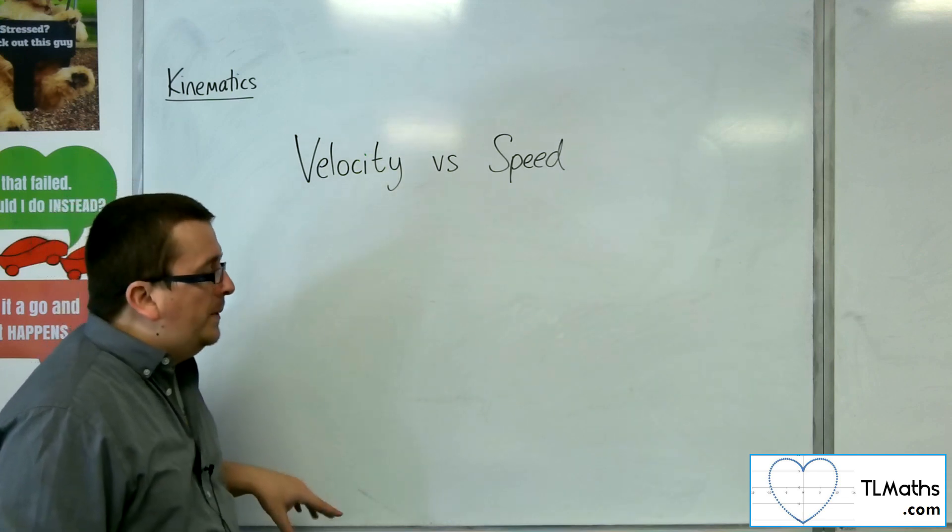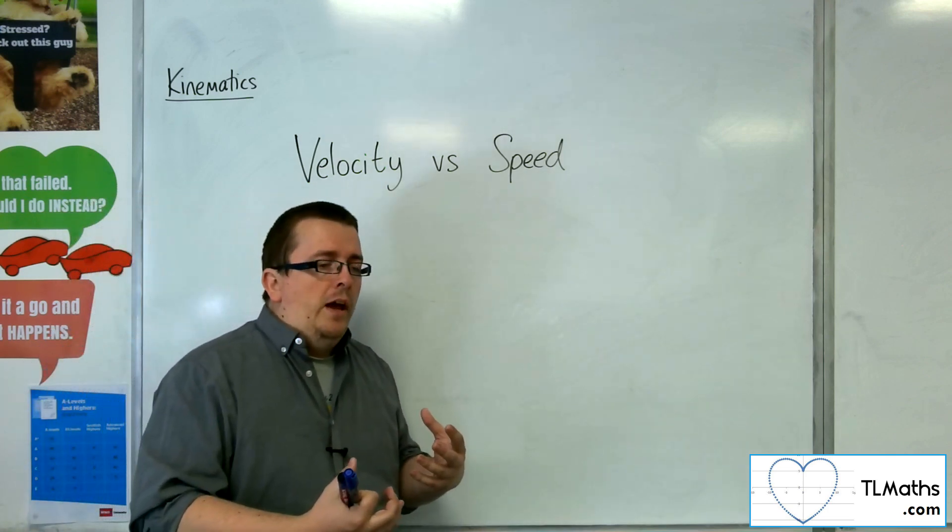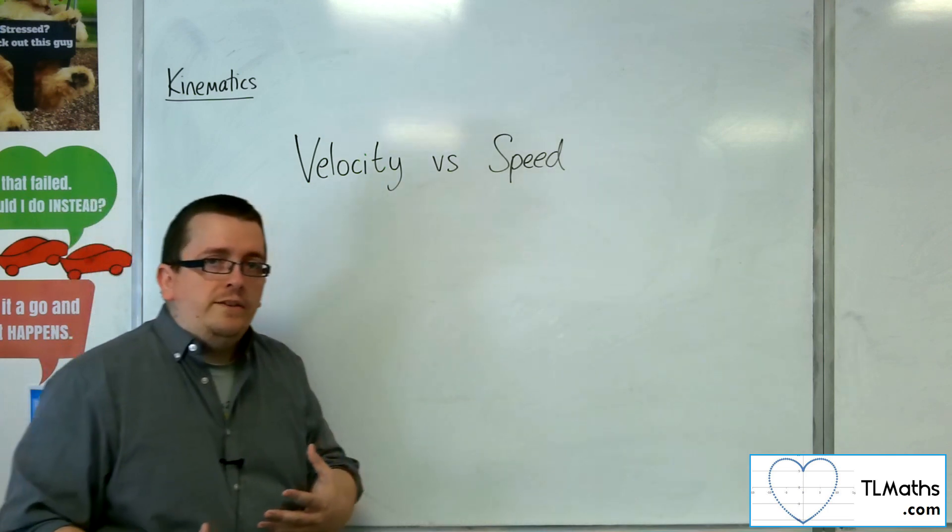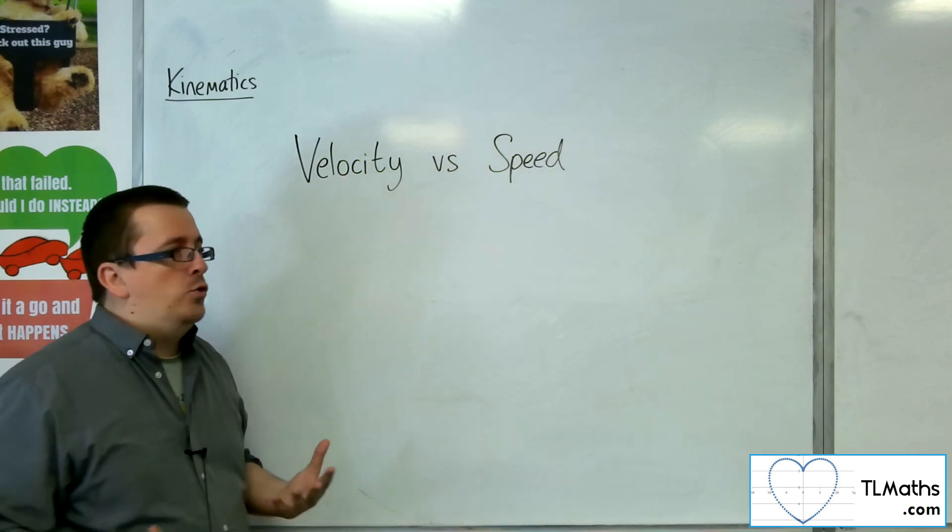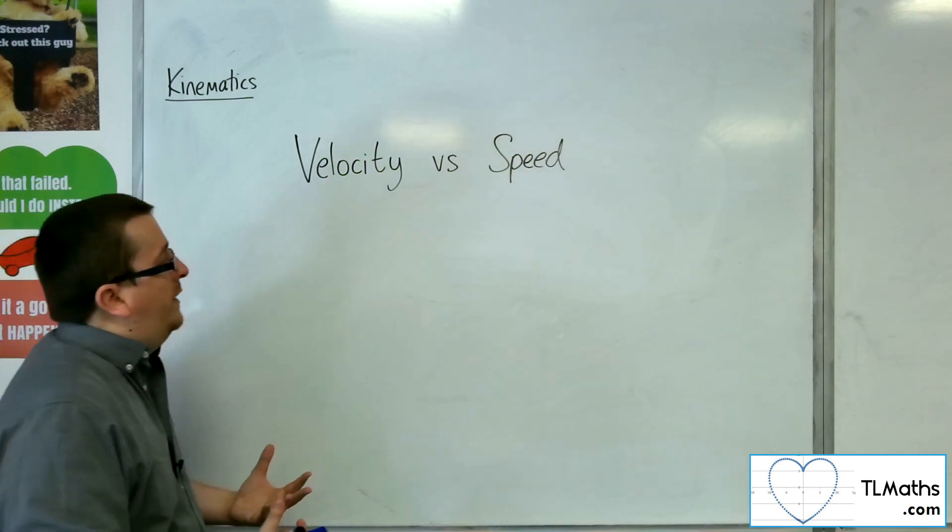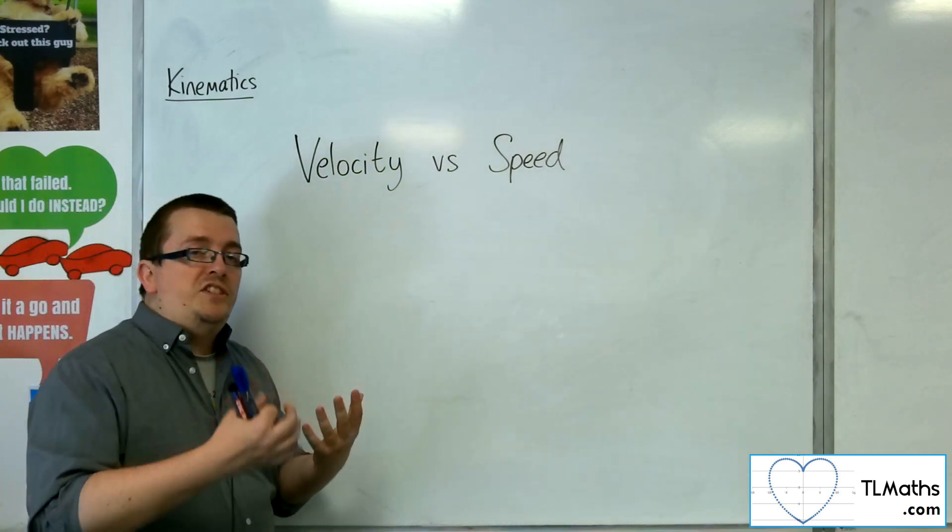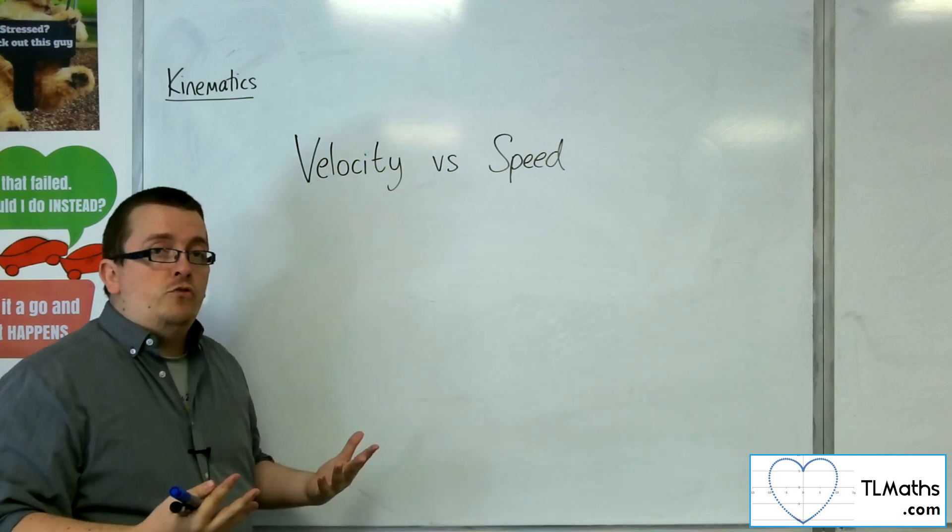Displacement has both a magnitude of distance and a direction applied to it, and hence it has that vector quantity. Velocity also has that vector quantity because it considers a magnitude of speed and a certain direction as well.